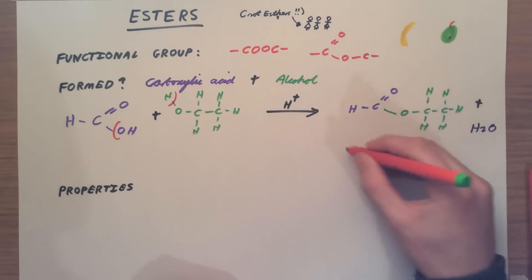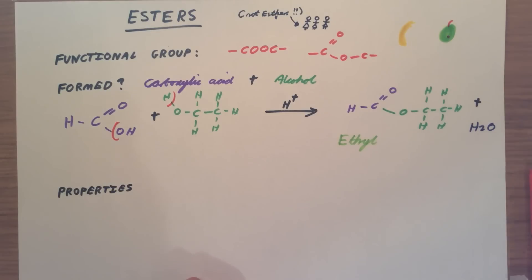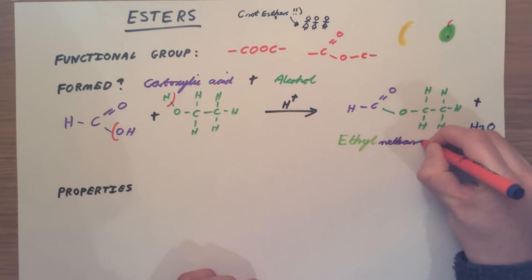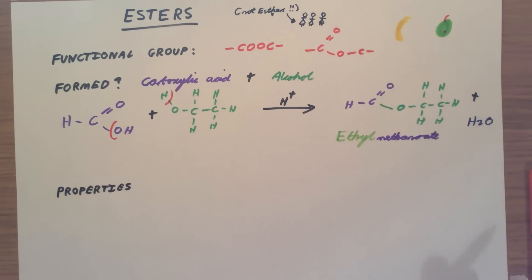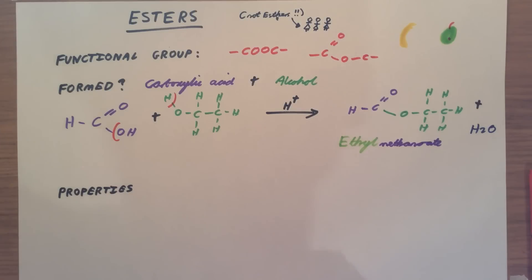So in this case, our ester is called ethyl, which is coming from our ethanol here, ethyl methanoate. Remember, you always name the alcohol section first, and then the part that comes from the carboxylic acid - ethyl methanoate.